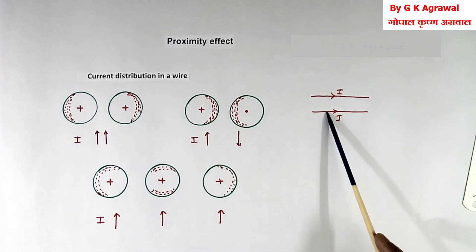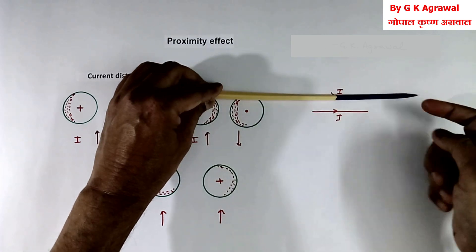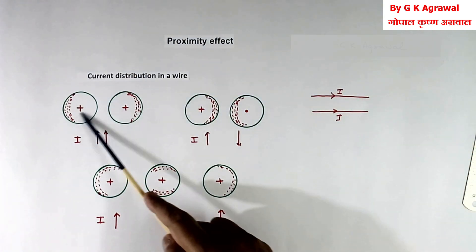This is cross section of this wire. Suppose this wire is like this. We cut from here, see from this side, then we will see a circle. That is cross section. That I have shown here.